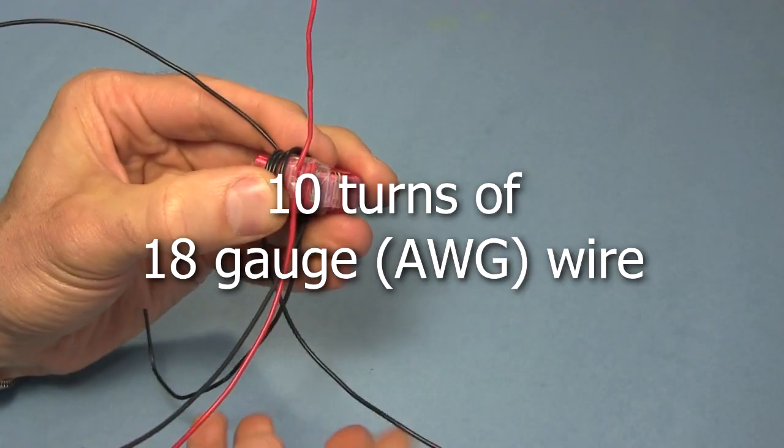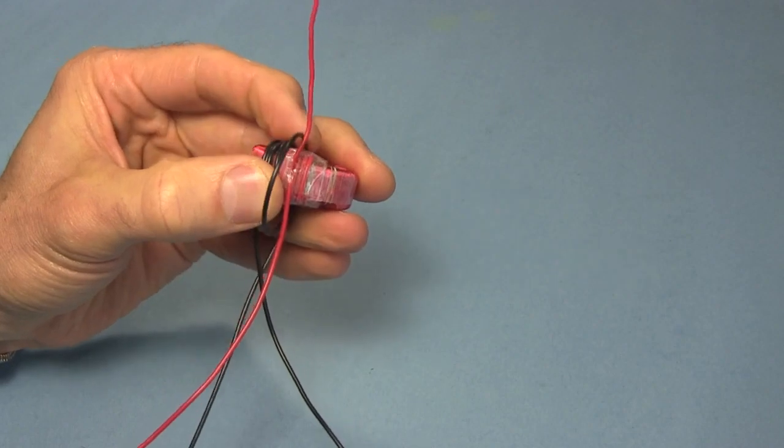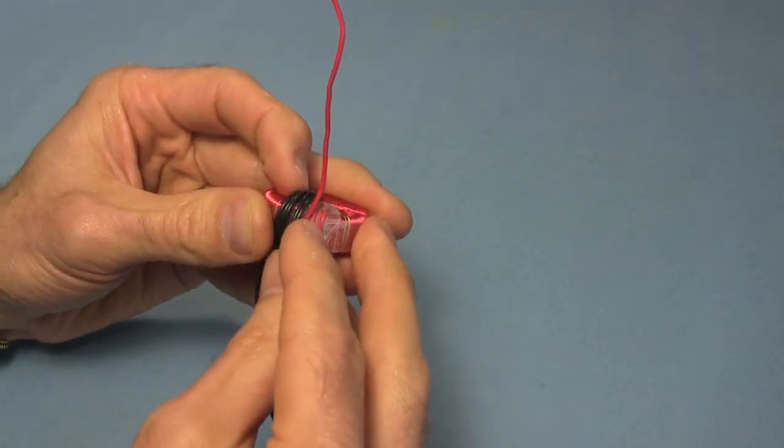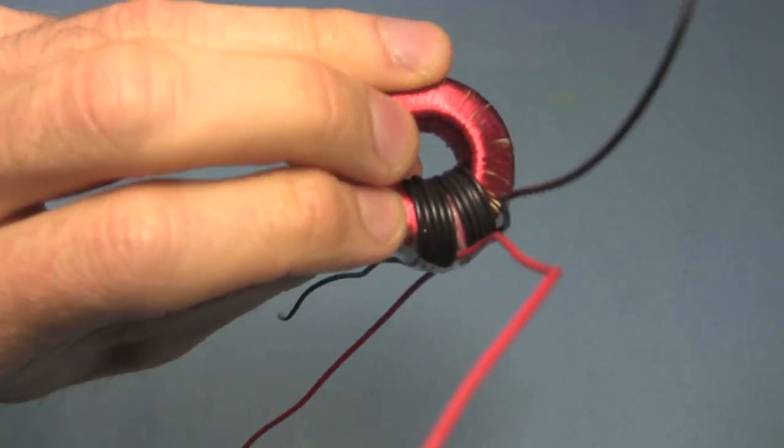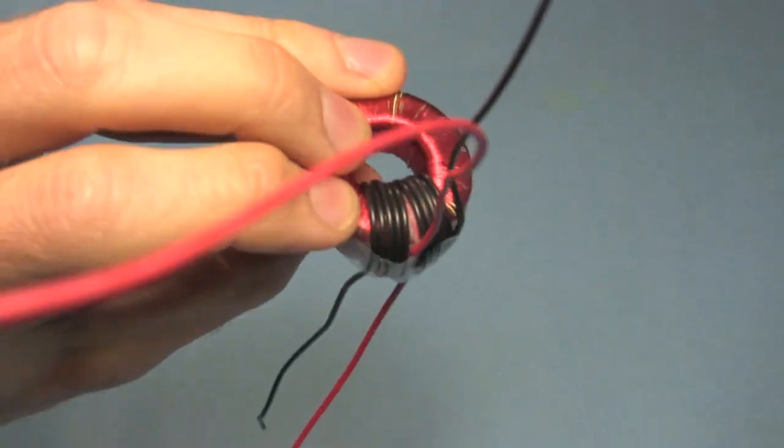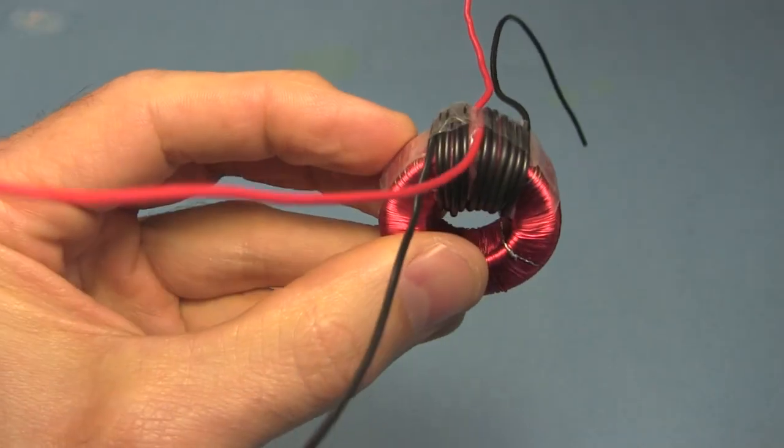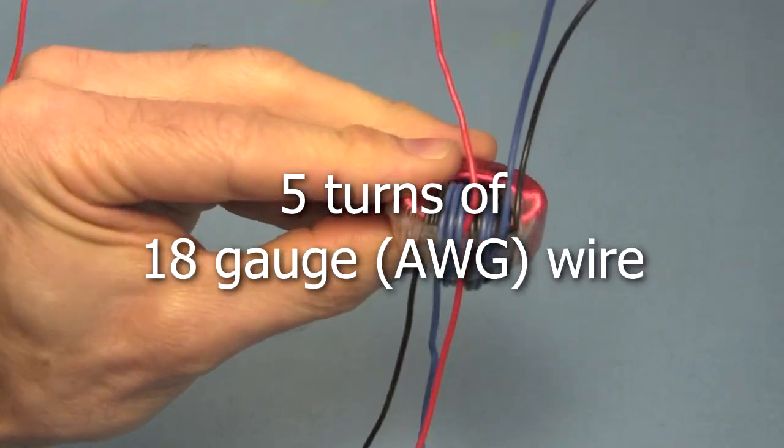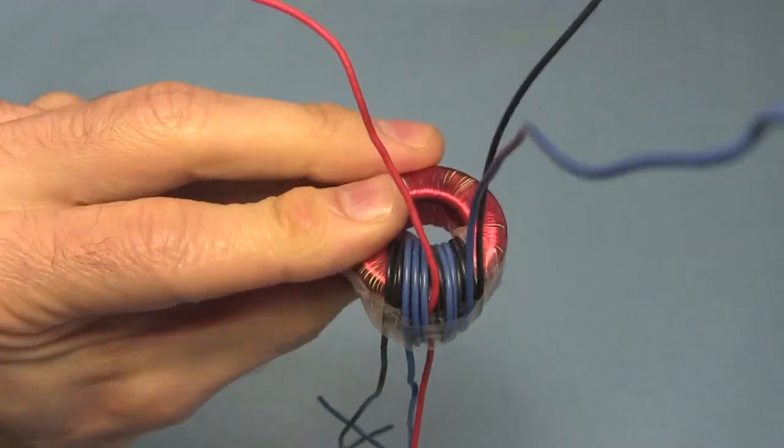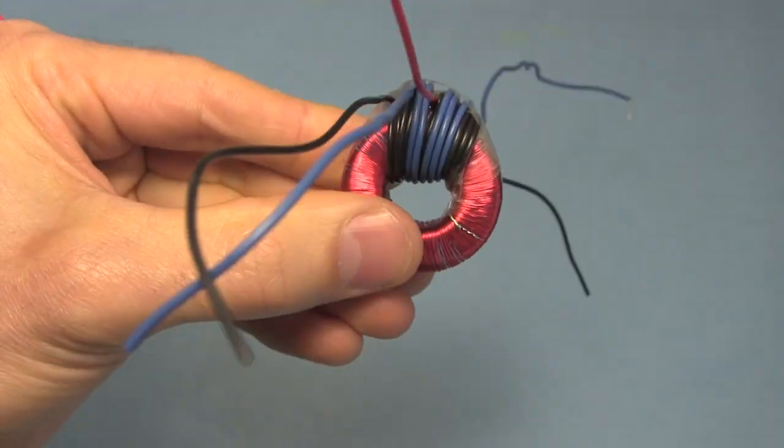This is followed by 10 turns of 18 gauge wire, surrounding where the first winding ended. Notice that this one has better insulation than just enamel insulation too, again to avoid breakdown due to the high voltage. I tried 7 turns first, but the results weren't as good, so don't be afraid to do some experimenting. And lastly, 5 turns of 18 gauge well insulated wire are wound on top of that. They can all be wound in the same direction.